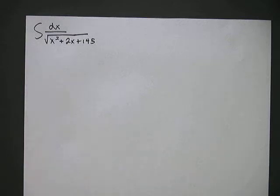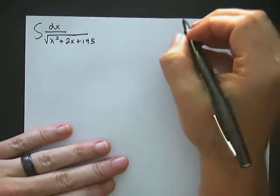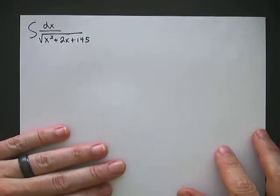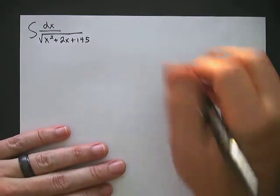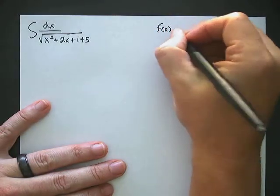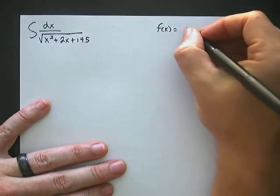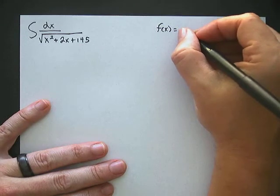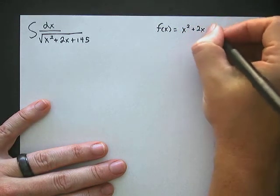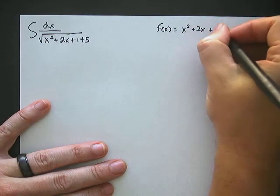In this problem we're given the integral of dx over the square root of x squared plus 2x plus 145. What we're going to do to start this problem is complete the square. So we're going to say our function f of x is equal to the quadratic — just the quadratic — x squared plus 2x plus 145.